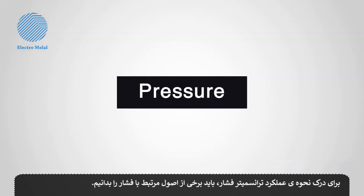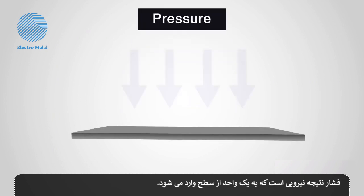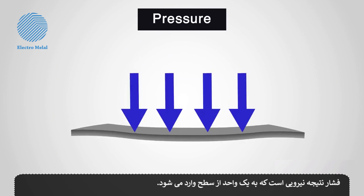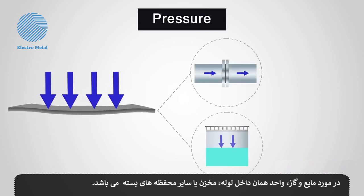To understand how a differential pressure transmitter works, we need to know some principles of pressure. Pressure is the result of force applied onto a unit of area. In the case of fluid and gas, this area would be the inside of a pipe, tank, vessel, or other sealed housing.